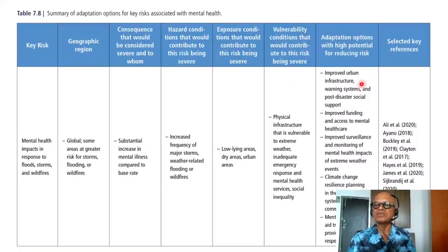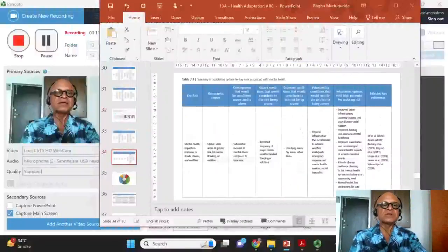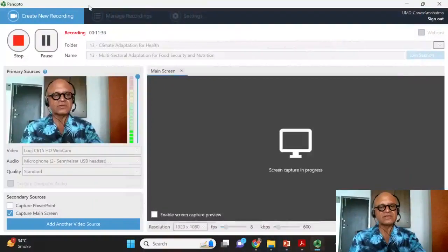Adaptation options for reducing mental health risks include improved urban infrastructure, warning systems, and post-disaster social support. Also important are improved funding and access to mental health care, improved surveillance and monitoring of mental health impacts of extreme weather, and climate change resilience planning in the mental health system at a community level. Mental health remains stigmatized in most communities, making it challenging for people — especially women and children — to report depression and other issues, requiring awareness and training for care providers and first responders.